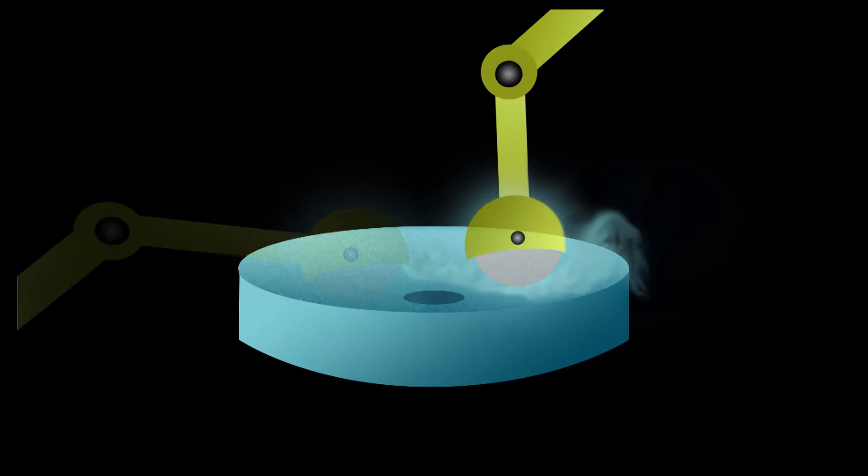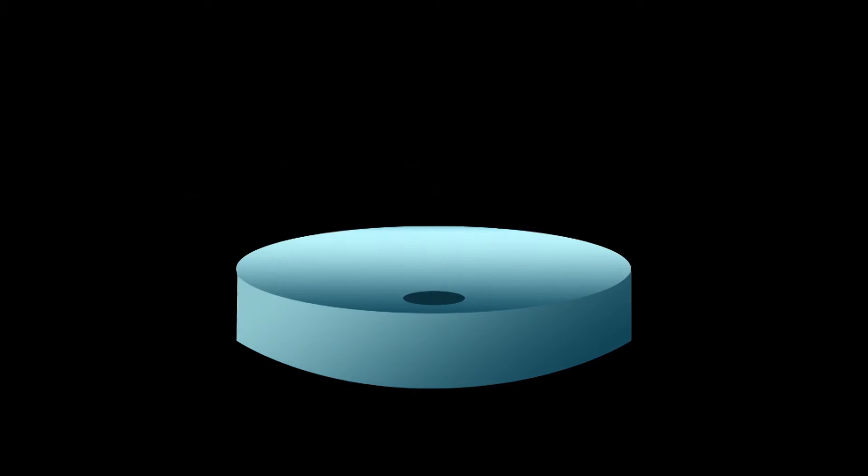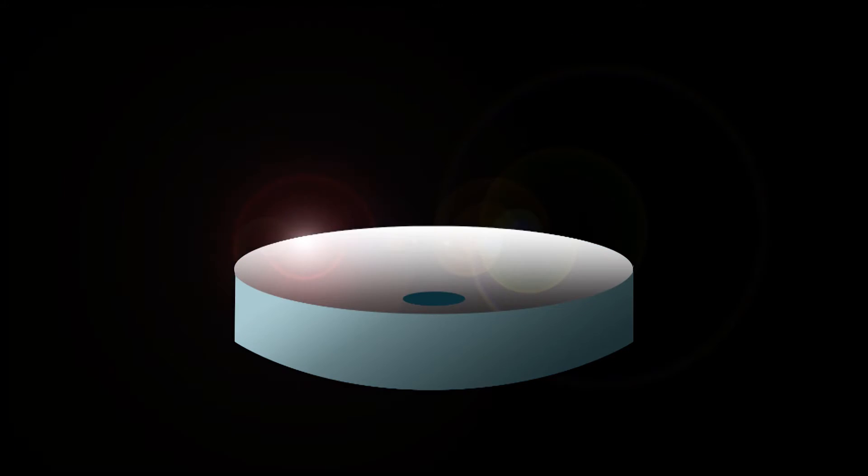The optical surface is then polished to be very smooth. Lastly, a reflective aluminum coating is applied.